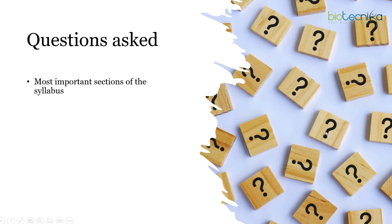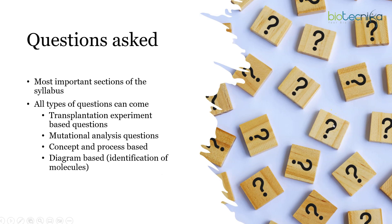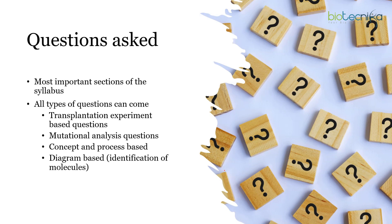These are the most important and somewhat vast sections of the syllabus, requiring individual study for each organism. Pay special attention to transplantation experiment-based questions and mutation analysis questions — for example, what happens if you mutate, overexpress, or inhibit beta-catenin, BMP, or Wnt. For transplantation, if you transplant micromeres from the vegetal pole to the animal pole in sea urchin, what is the outcome? Concept, process, diagram-based, and signaling sequence questions are all possible.